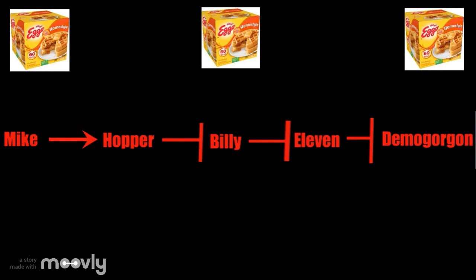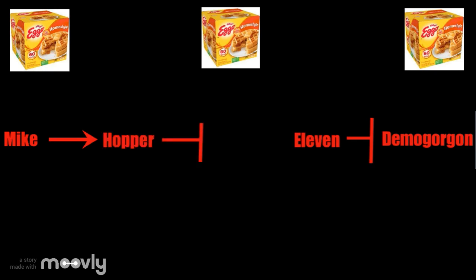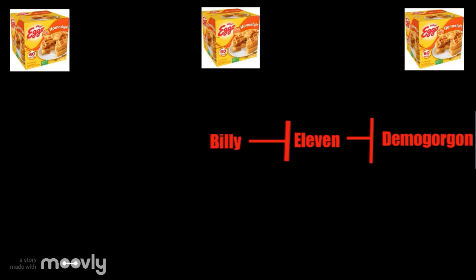If there is no Hopper, then the demogorgon would still not be defeated because Billy is not being repressed and would block 11. If we get rid of Billy, he will not block 11 and she will be able to defeat the demogorgon. There can also be double mutants, so if we get rid of both Mike and Hopper, 11 would not defeat the demogorgon because Billy is going to block her still.